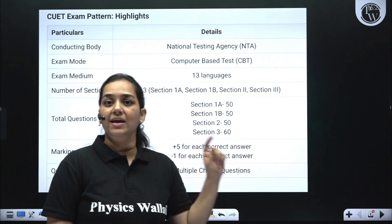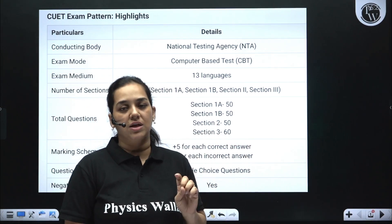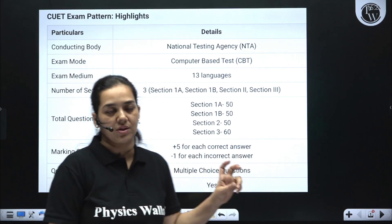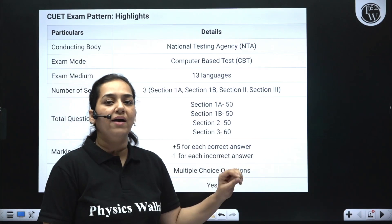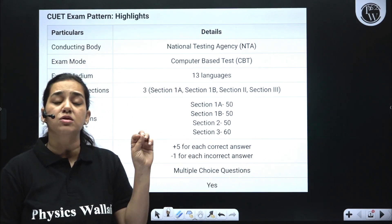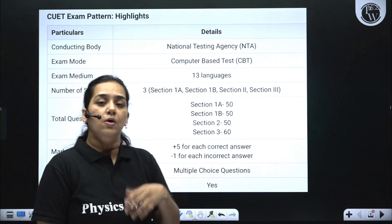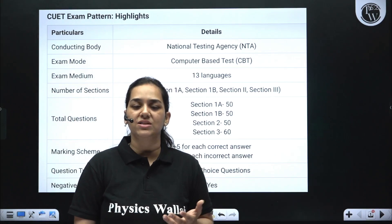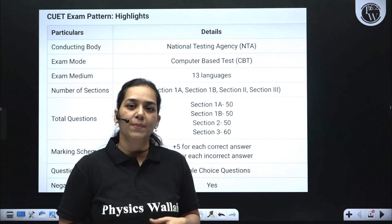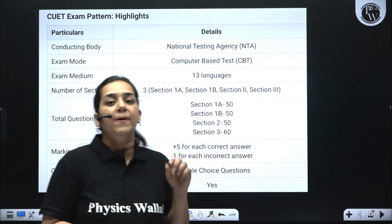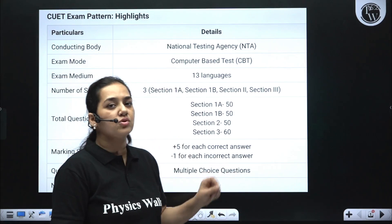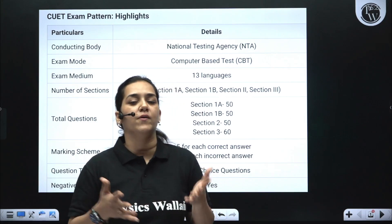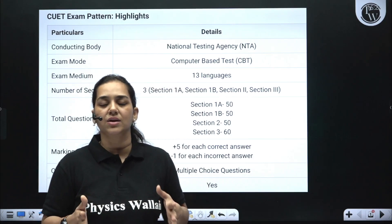Section 1A gives you an option of 13 languages and Section 1B gives you an option of 20 languages. In Section 2 you have 27 domain specific subjects — whatever you want to pick as your specialisation. Let's say you want to pick biology; there will be some relevant options you can choose. Section 3 is actually a general knowledge kind of paper which includes general knowledge itself, aptitude, logical reasoning and all of that.